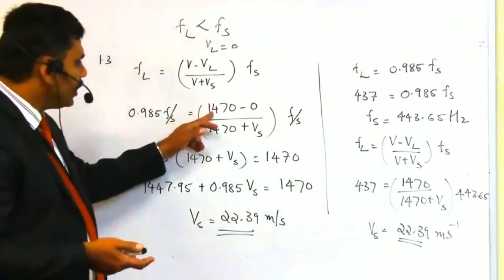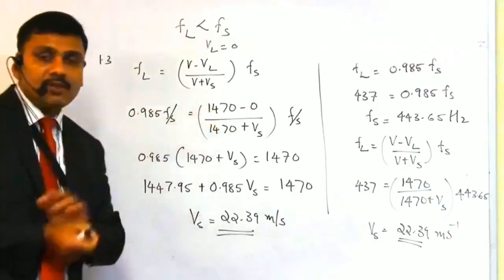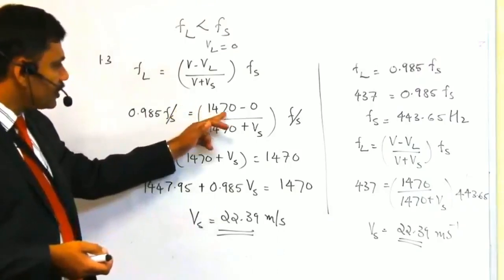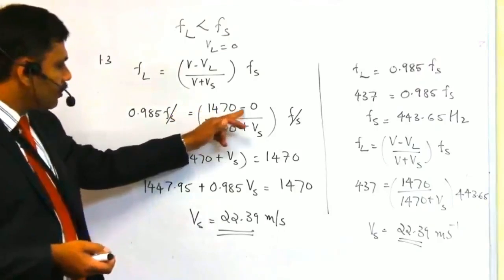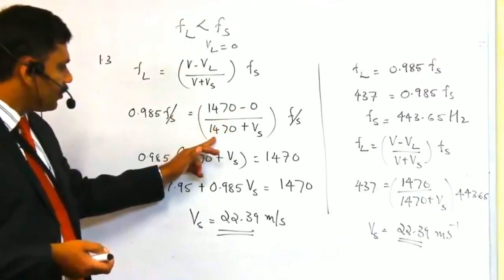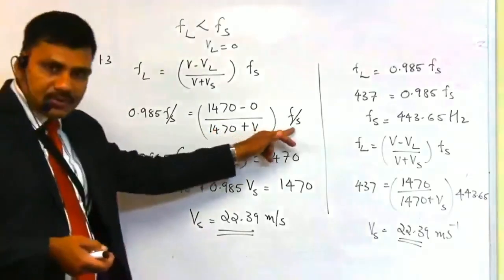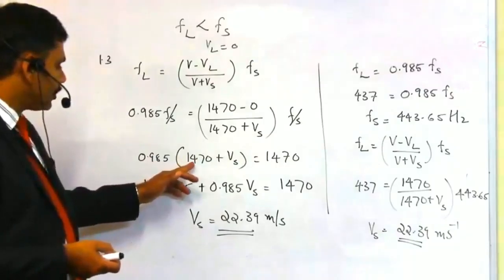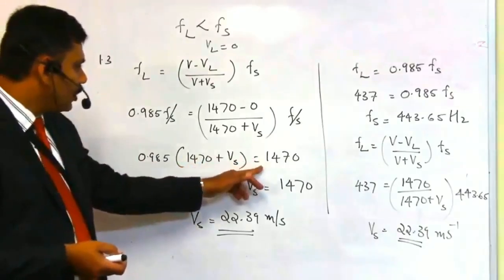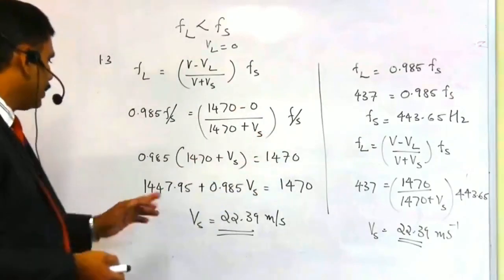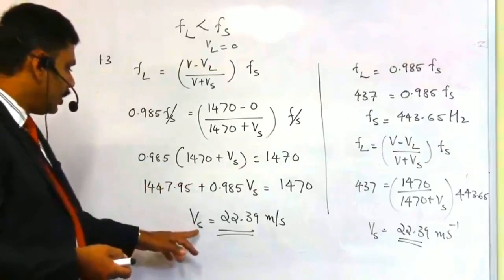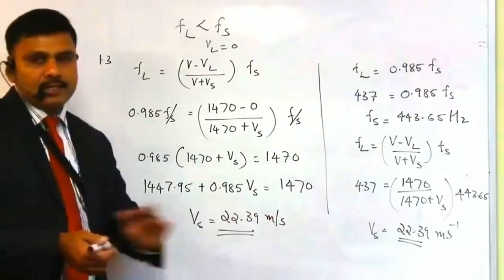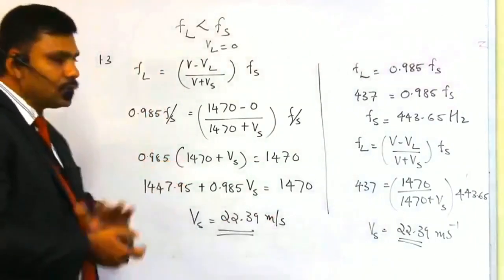The speed of sound in water is 1470 — not 340, which is the speed of sound in air. So: 0.985 Fs = (1470 / (1470 + Vs)) × Fs. Cross-multiplying: 0.985 × (1470 + Vs) = 1470. By mathematical calculation, Vs — the speed of the ship — equals 22.39 meters per second. This is the first method to solve this problem.